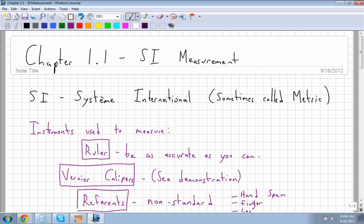Hello and welcome to chapter 1.1, SI measurement. SI stands for System International. It's the system we use for measurement in Canada. It's also sometimes called metric.